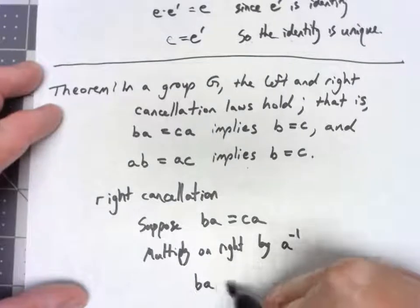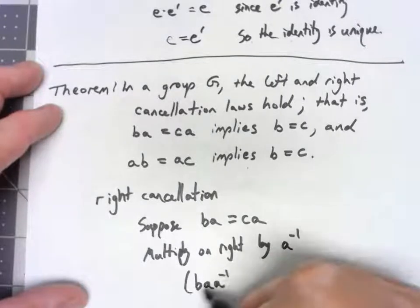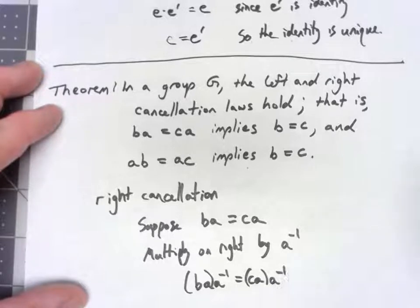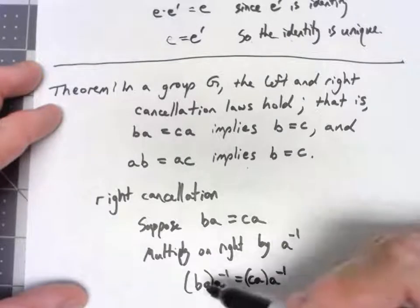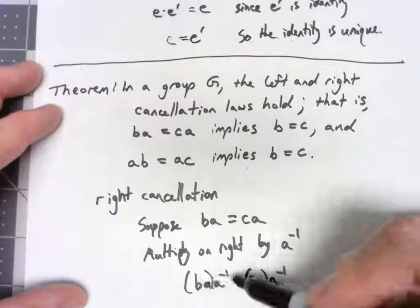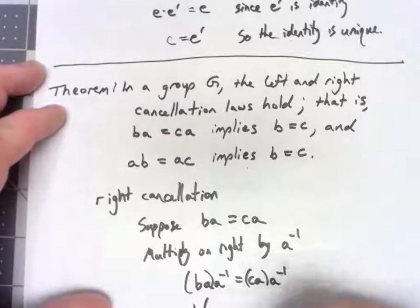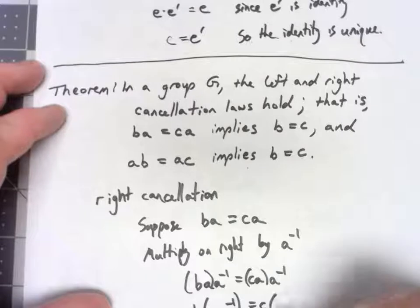So BA A inverse is equal to CA A inverse. But then we can use the associativity. That's a group property. So B times A A inverse would have to equal C times A A inverse.